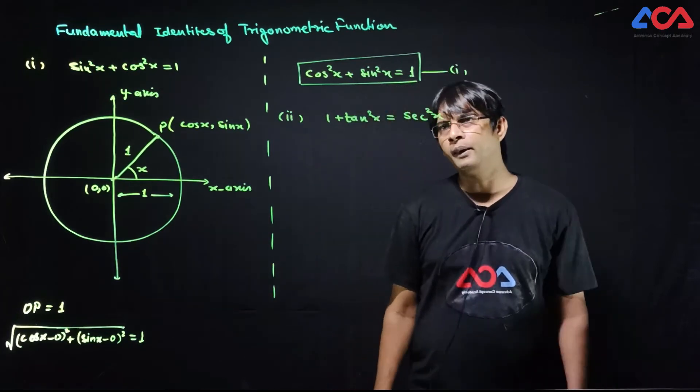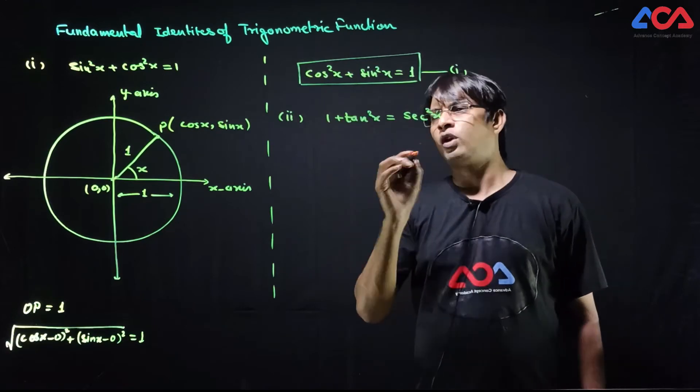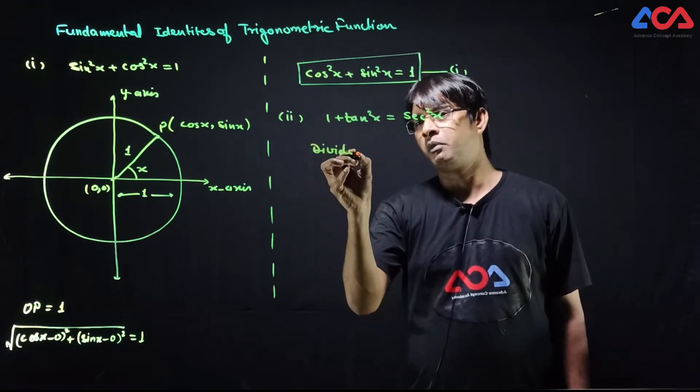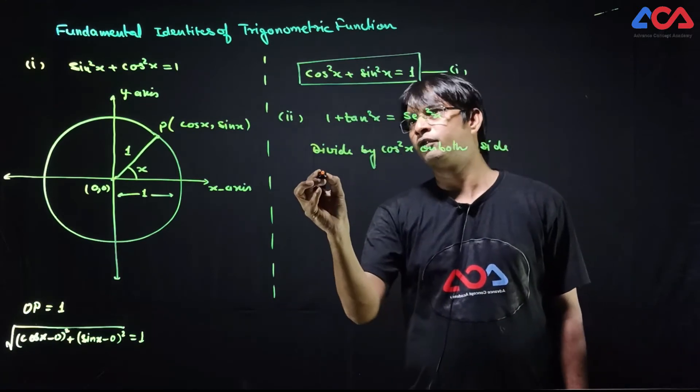We follow the first equation. In the first equation, on both sides, divide by cos²x.